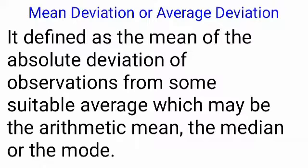The mean deviation or average deviation is defined as the mean of the absolute deviations of observations from some suitable average, which may be the arithmetic mean, the median, or the mode. After calculating the arithmetic mean, median, or mode, we want to calculate the deviation from that average and then calculate the mean of the absolute deviations. By using the formulas, we understand how to calculate mean deviation.